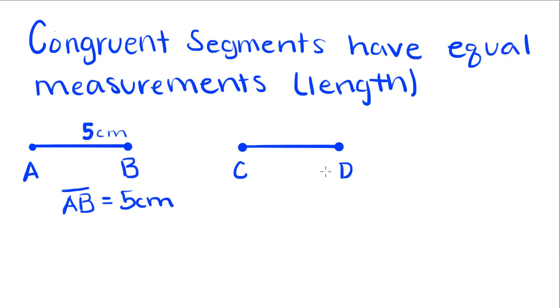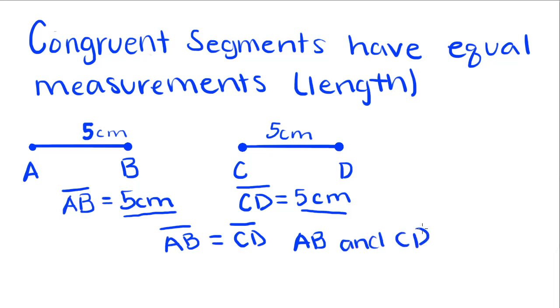We're going to measure C to D, and you would find that the length is also 5 centimeters. So we write that CD is equal to 5 centimeters. And since they have equal length, we can say that line segment AB is equal to line segment CD. Or, that AB and CD are congruent line segments.